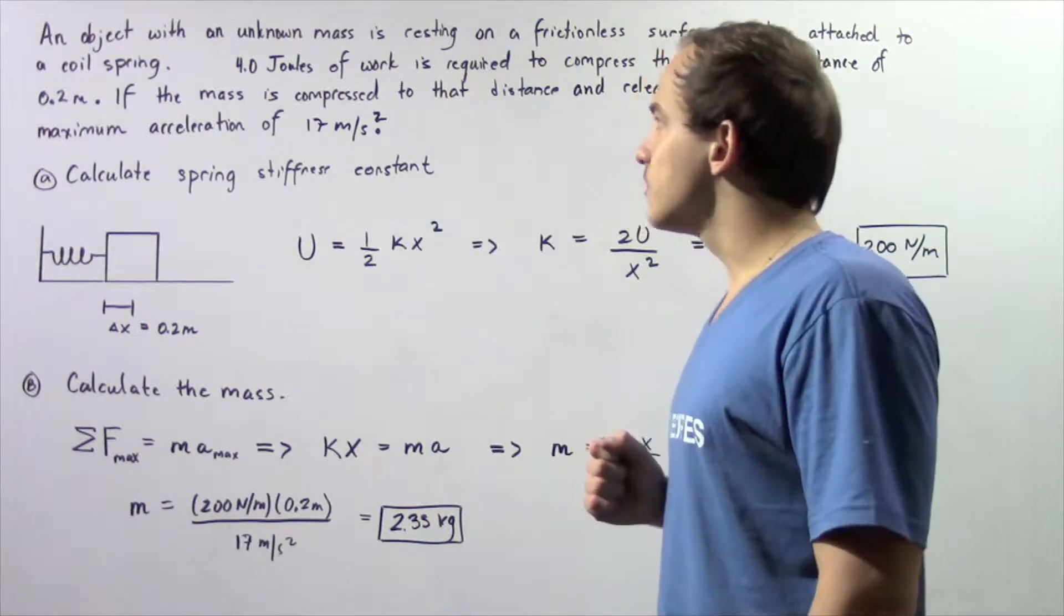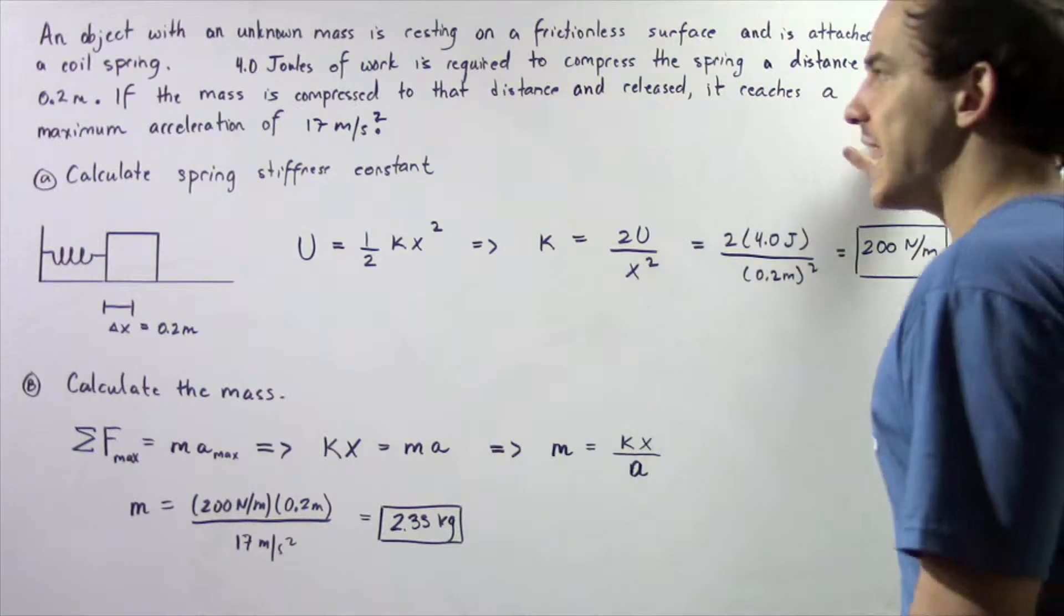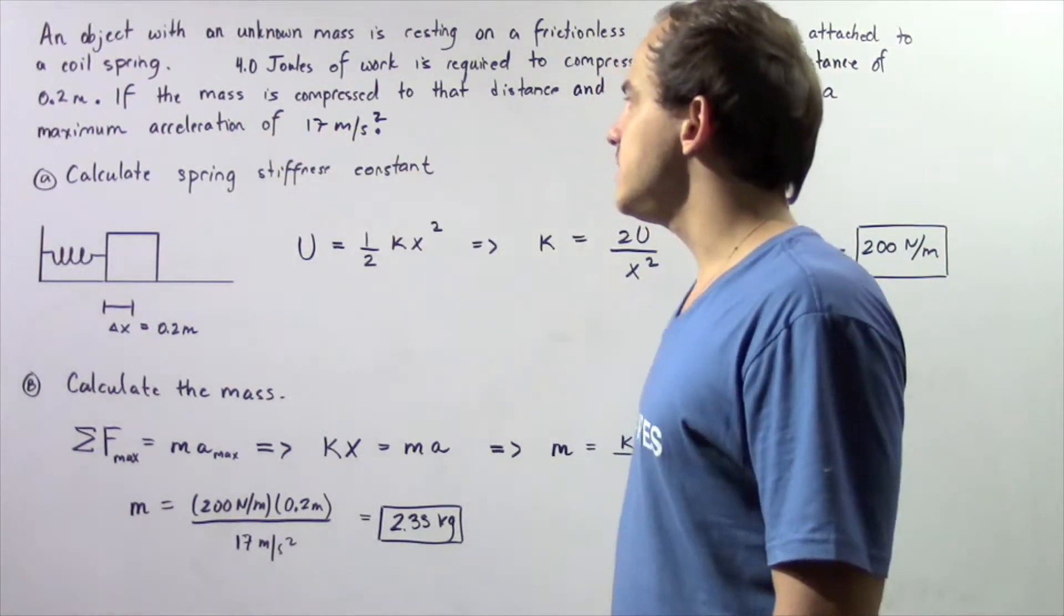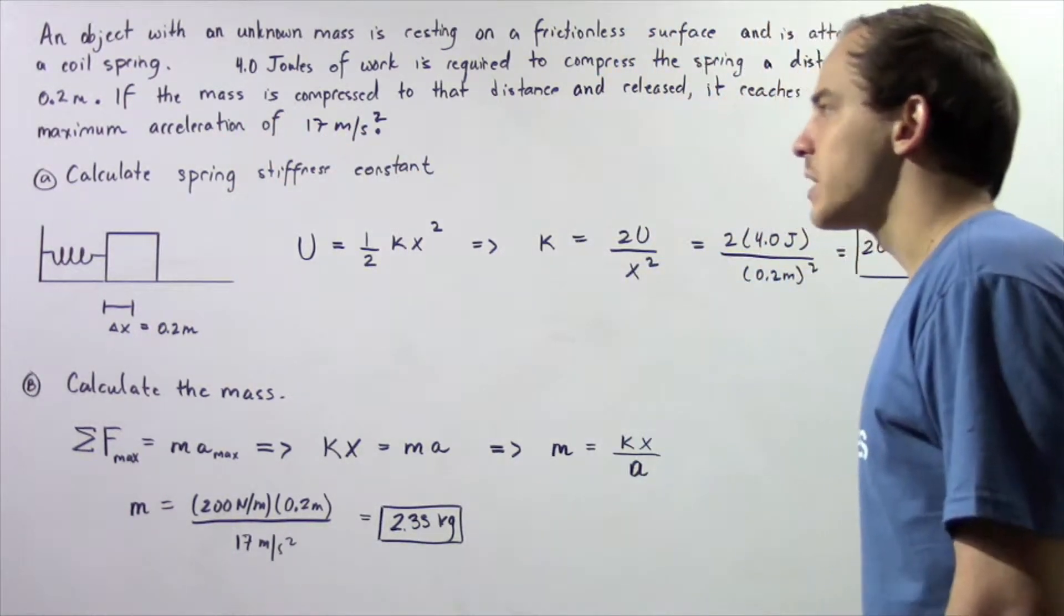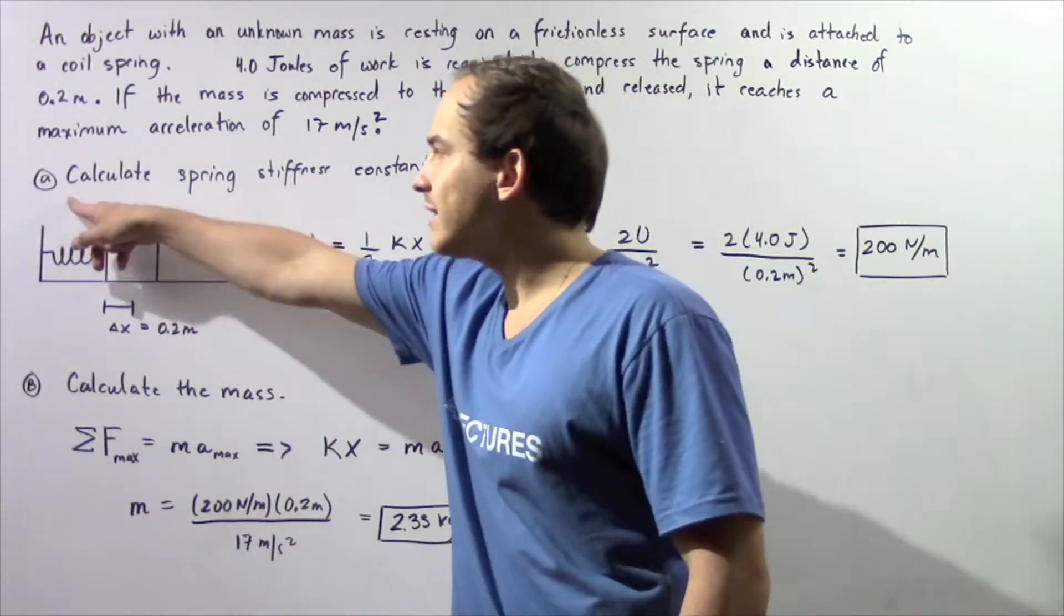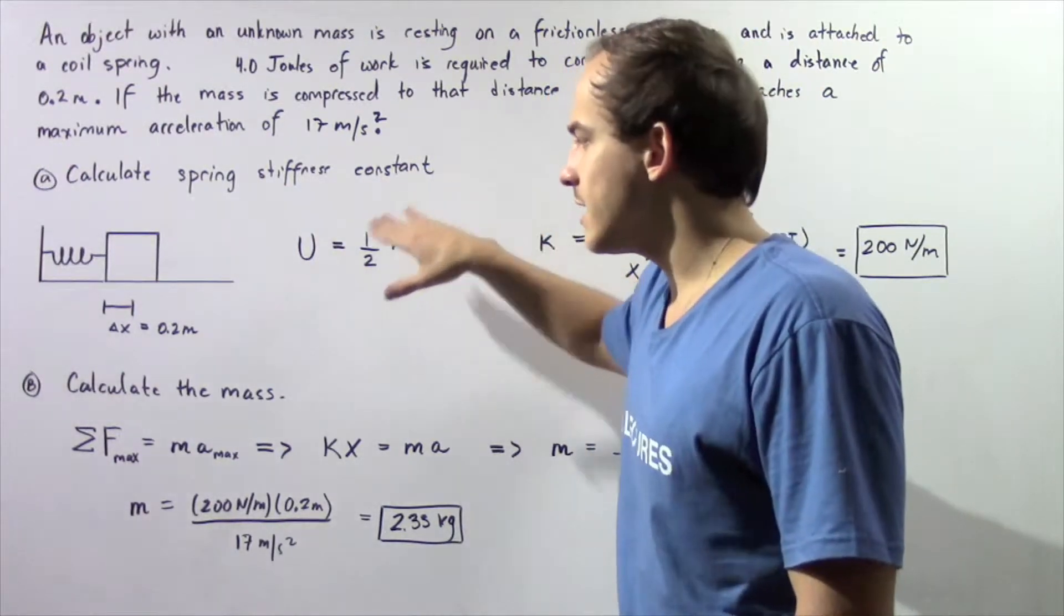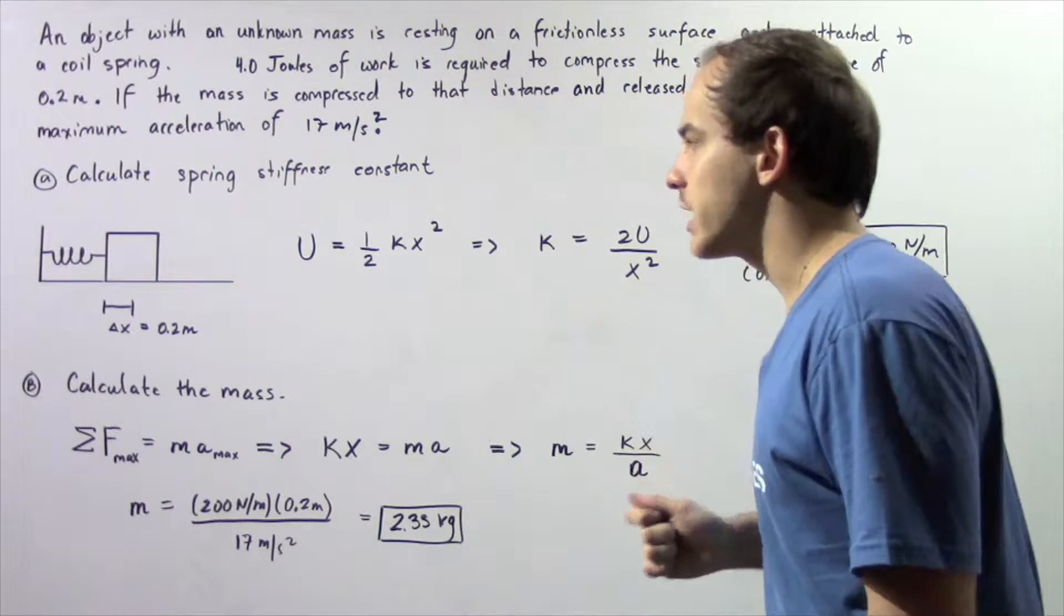Four joules of work is required to compress the spring a distance of 0.2 meters. If the mass is compressed to that distance and then released, it reaches a maximum acceleration of 17 meters per second squared. Assuming simple harmonic motion, let's calculate in part A the spring stiffness constant and in part B the mass of our object.